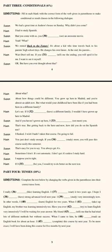In type one — the type one conditional — it tells us more about possible future occurrences. Its form is 'will plus verb one.' The if-clause is in the simple present tense, and the main clause is in the simple future tense, which is 'will plus verb one.'